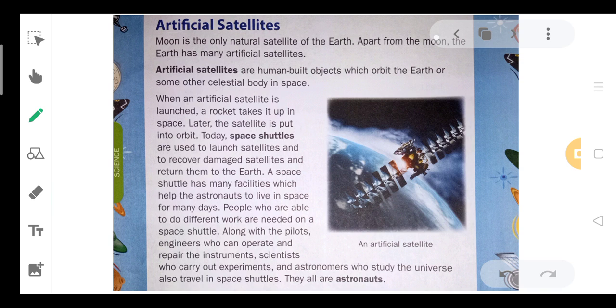When an artificial satellite is launched, a rocket takes it up in space. Later, the satellite is put into orbit. Today, space shuttles are used to launch satellites and to recover damaged satellites and return them to the earth. A space shuttle has many facilities which help astronauts to live in space for many days.